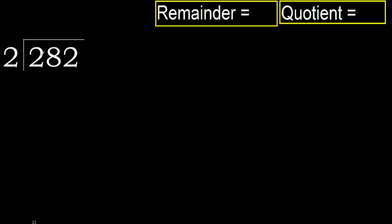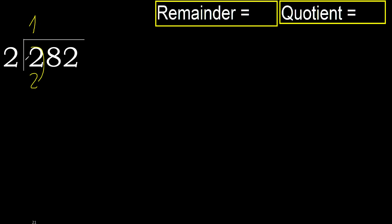282 divided by 2. 2 is not less, therefore 2 multiplied by which number is nearest to 2 but not greater? 2 multiplied by 2 is 4, which is greater. 2 multiplied by 1 is 2, which is not greater. Ok, subtract. Next, bring down the 8.